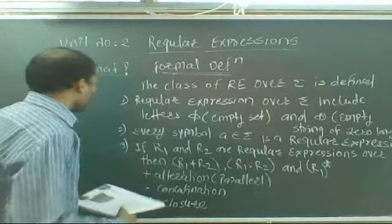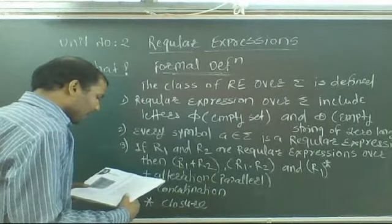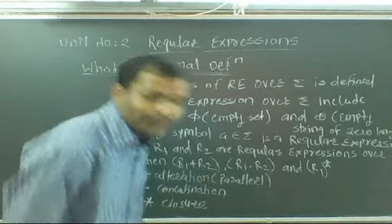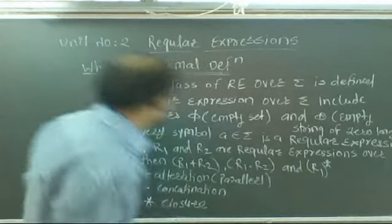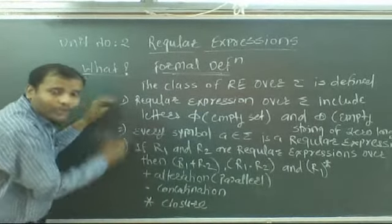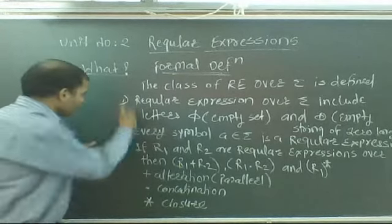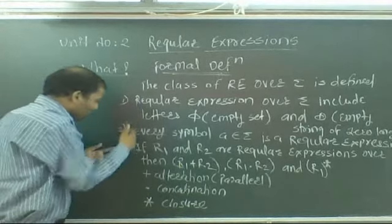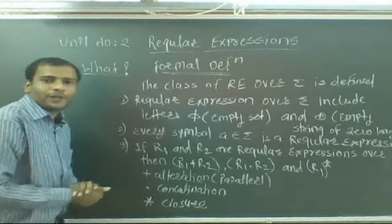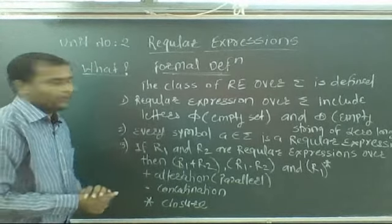The fourth and last property: regular expressions are only those that are obtained using rules 1, 2, and 3. Whatever regular expression we can obtain must be derived using rule number 1, 2, and 3. That particular expression we can term as a regular expression.